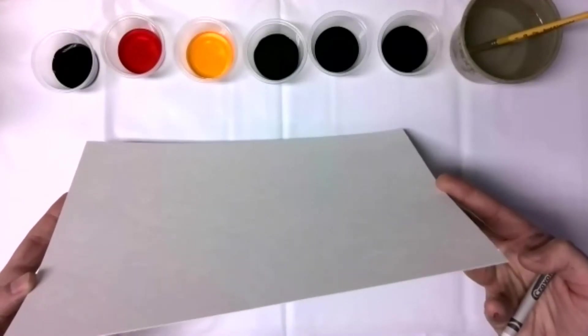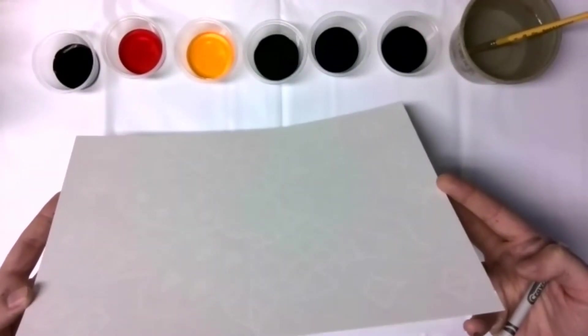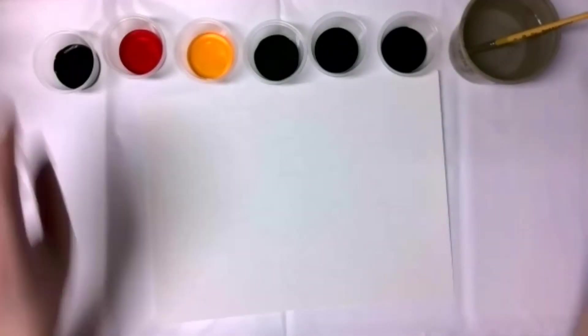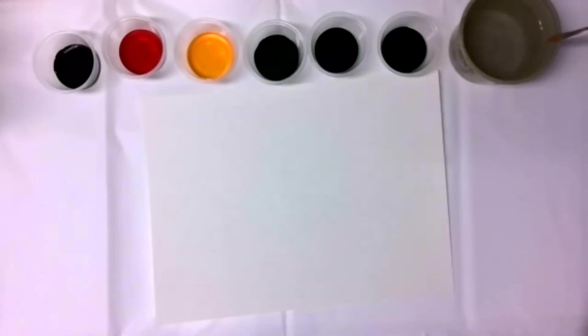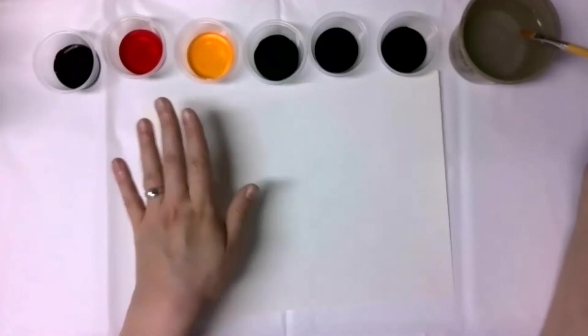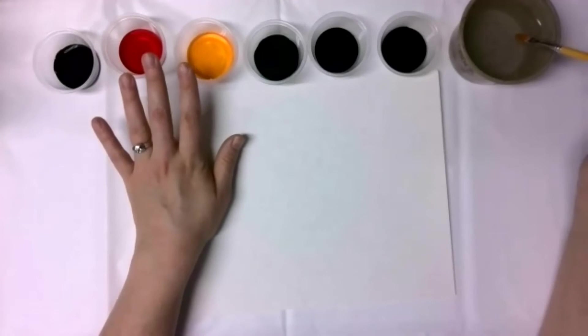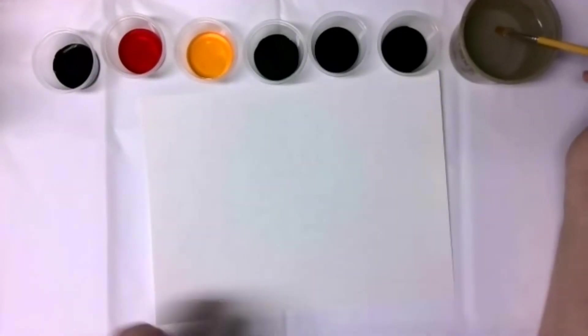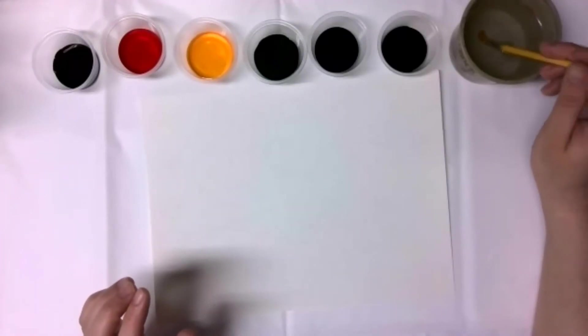So you can kind of see it faintly on the screen. And now we are going to go in with our watercolors. So it's hard to tell with certain colors, like the orange and the yellow, you can kind of distinguish them, but then the rest of them all kind of look the same, but I made sure I put them in the order of like rainbow colors. So I would know which was which.